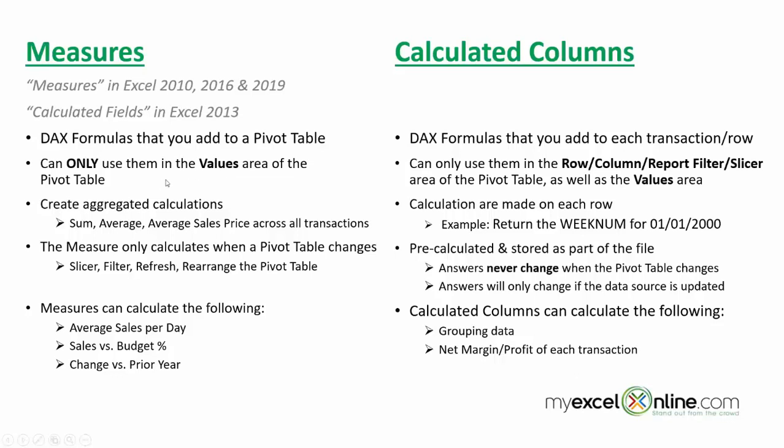You will use Measures when you want to create aggregated calculations — for example, sum, average, or the average sales price across all your transactions. The measure will only calculate when the pivot table changes, so if you're using slicers, filtering, refreshing, or rearranging the pivot table, that's when the measure will be calculated and updated.